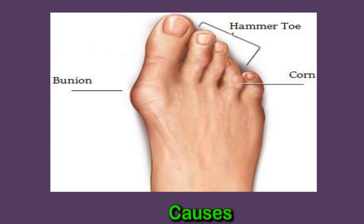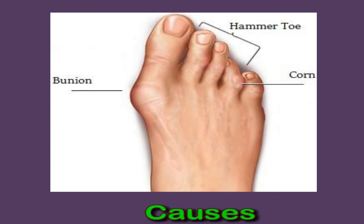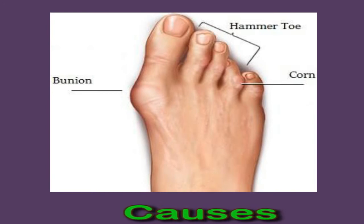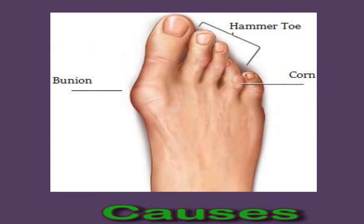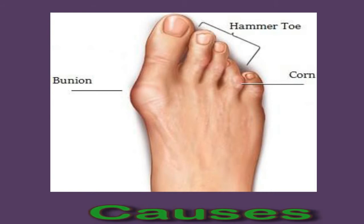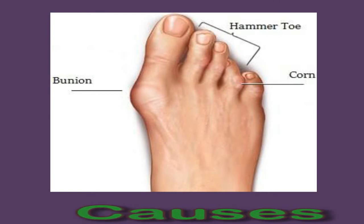When worn repeatedly, the toes may not be able to straighten even when barefoot. Women are more likely to develop hammer toe than men. Injuries — when a toe is broken, stubbed, or jammed, it may be more likely to develop hammer toe. Age — risk increases with age. Toe length — if the second toe is longer than the big toe, hammer toe is more likely to occur.